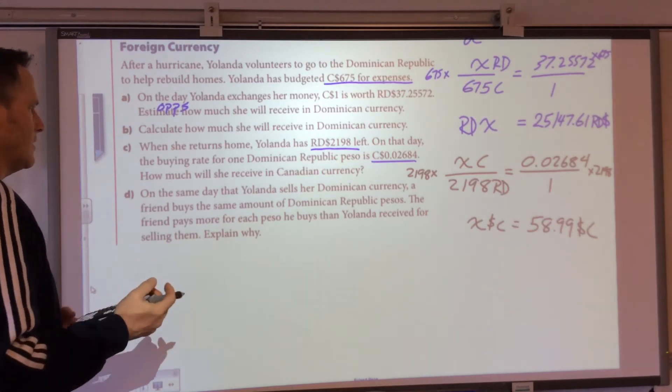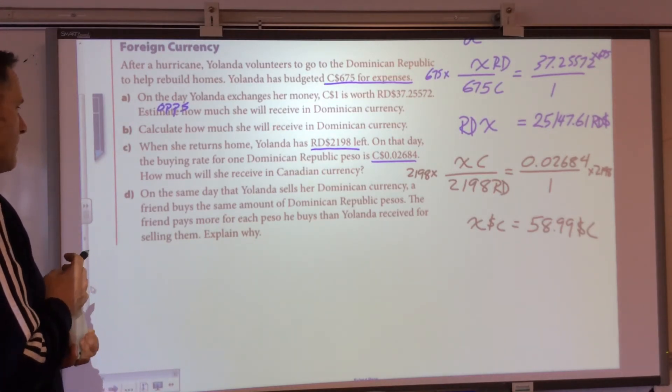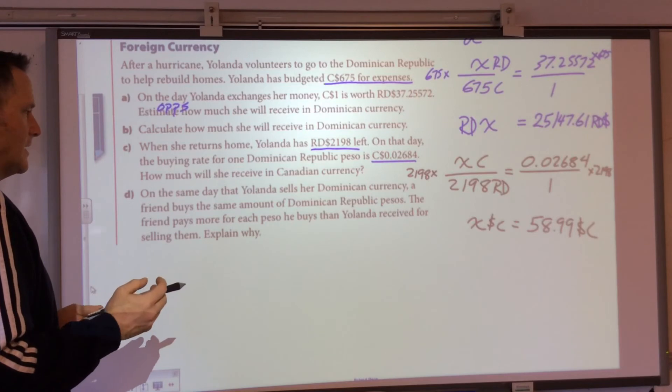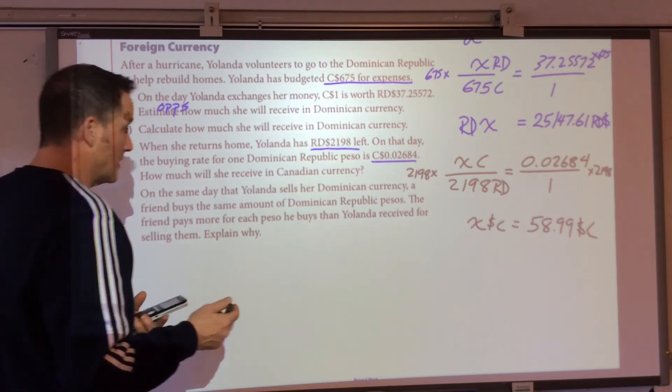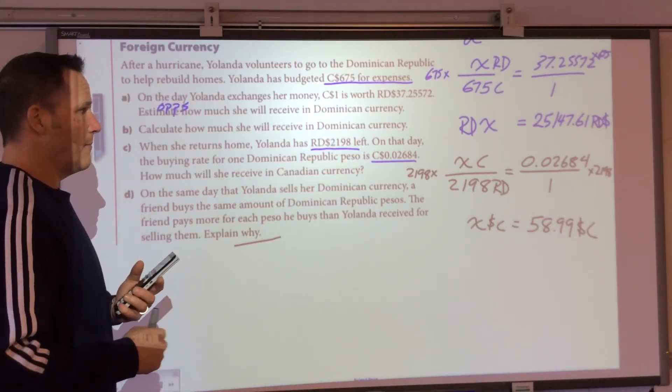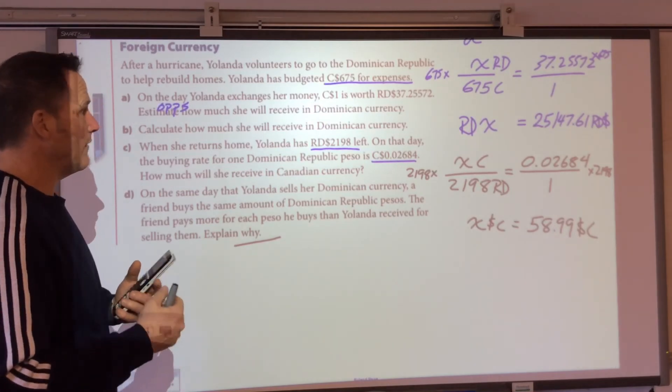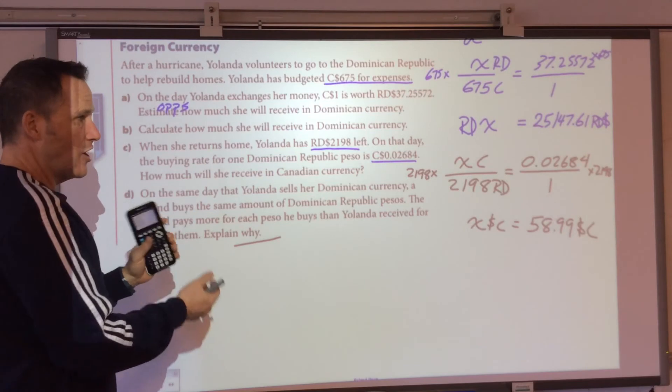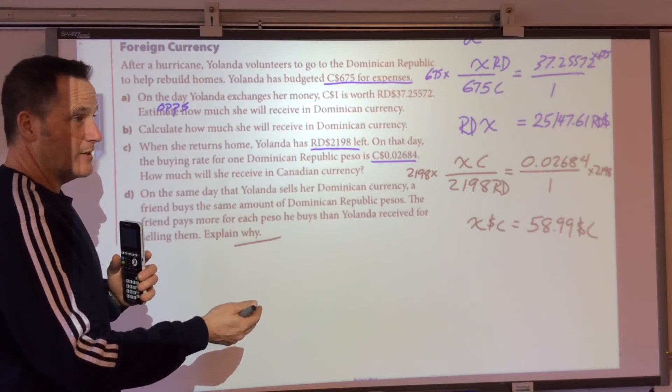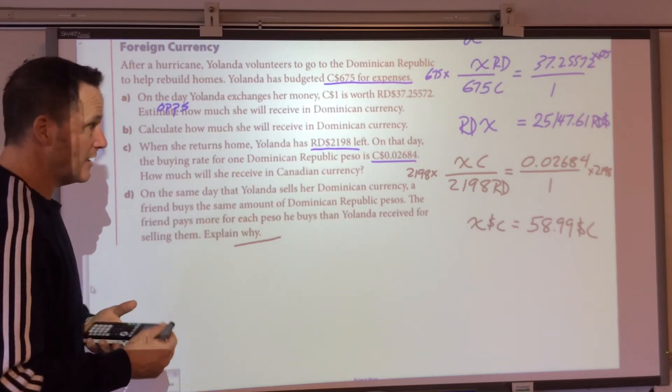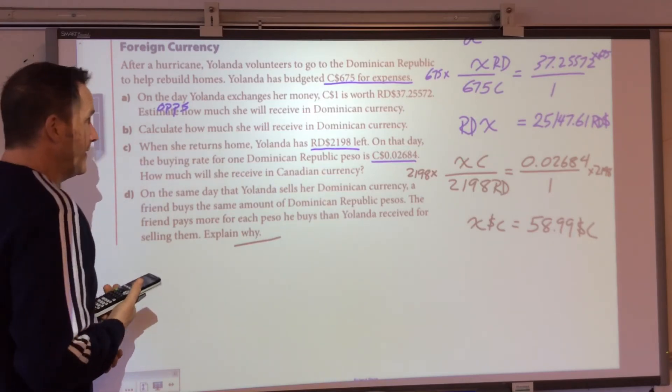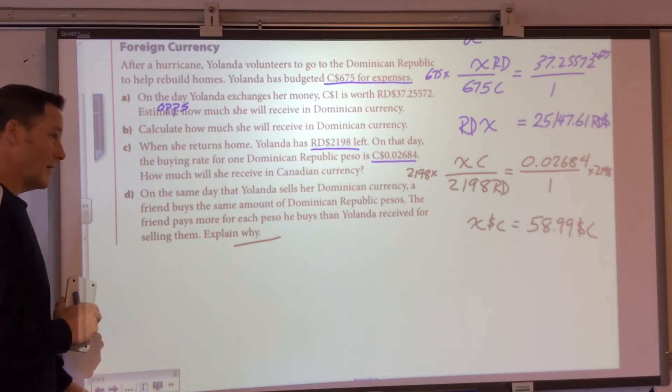On the same day that Yolanda sells her Dominican currency, a friend buys the same amount of Dominican Republic Pesos. The friend pays more for each peso he buys than Yolanda received for selling them. This gets into when you go to the bank and you're looking at an exchange rate. The bank has to make money. So whatever the actual exchange rate is, they charge you a bit more so that you get less than what the exchange rate is if you're buying Canadian dollars. Or they charge you more Canadian dollars to get U.S. dollars, because they've got to get their piece of the action. So the selling rate and buying rate will never be the same.